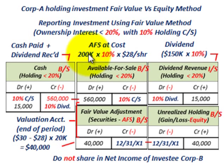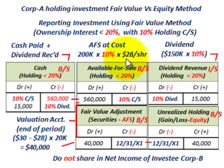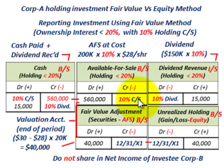There were 200,000 shares of common stock of Corp B, and 10% was purchased by Corp A at a cost of $28 per share. So we debit or increase our available for sale account on our balance sheet for $560,000 — that's the 10% ownership of common stock. Then we credit or reduce our cash account for $560,000.